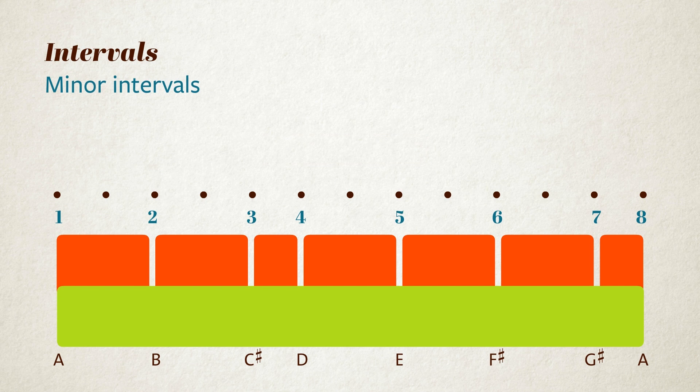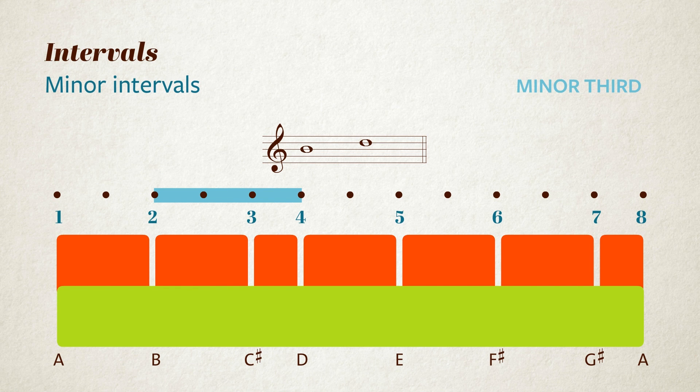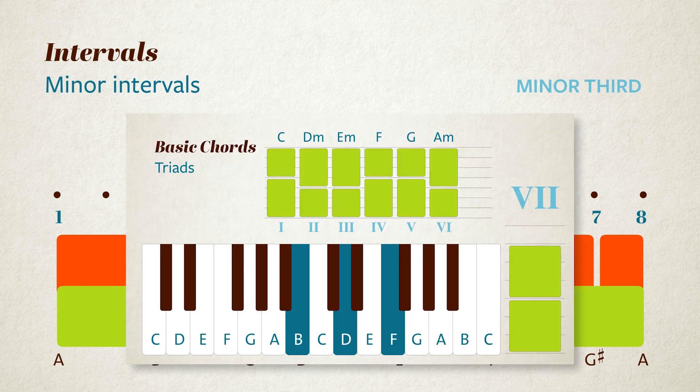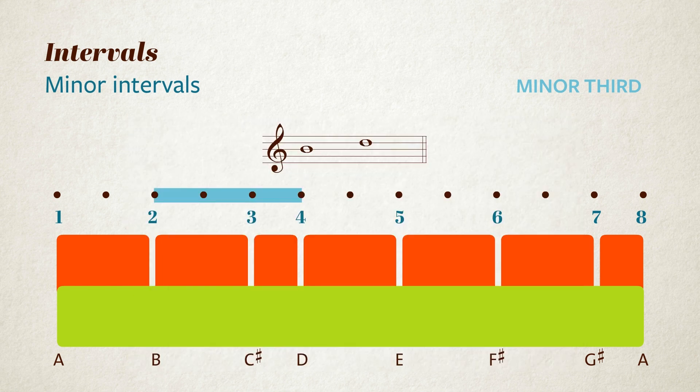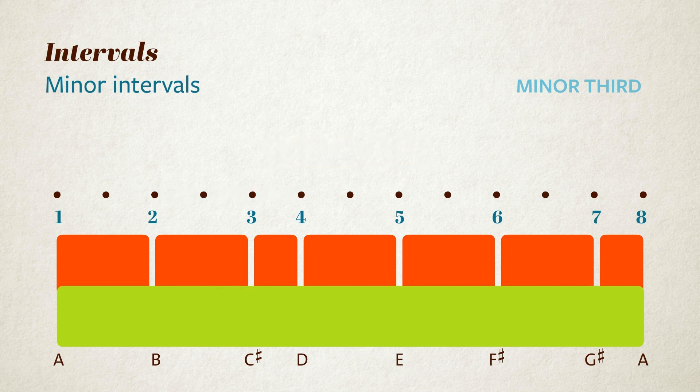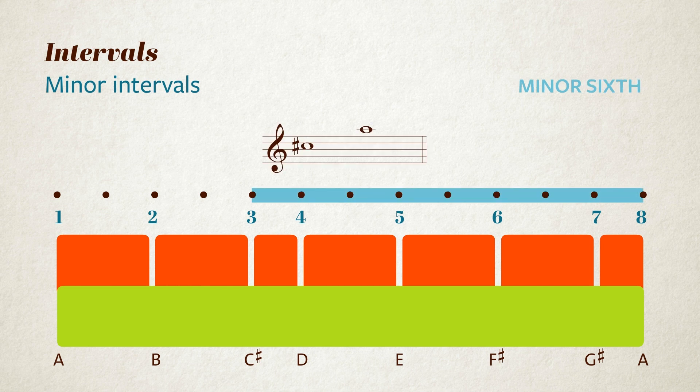Some intervals aren't major. B to D, for example, is a semitone smaller than a major third. You'll remember from my video on basic chords that this interval is a minor third. Any interval that's a semitone smaller than a major interval is a minor interval. So C sharp to A, which is eight semitones, is a minor sixth. B to A would be a minor seventh, ten semitones apart.